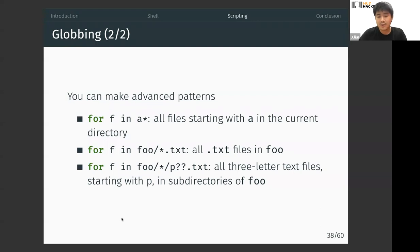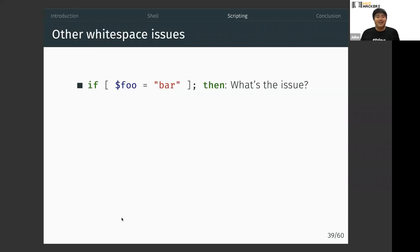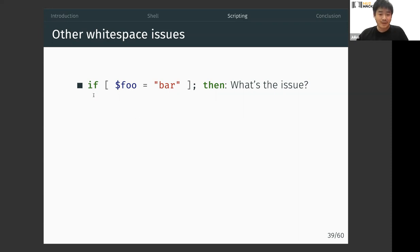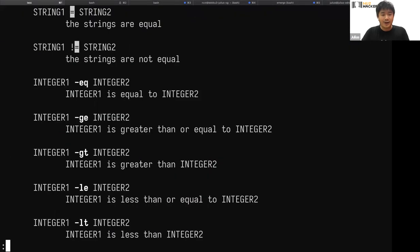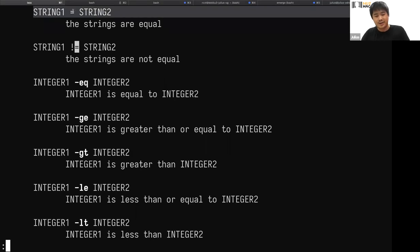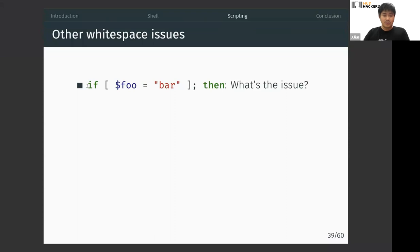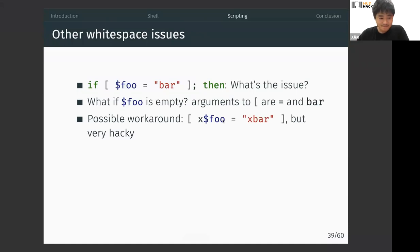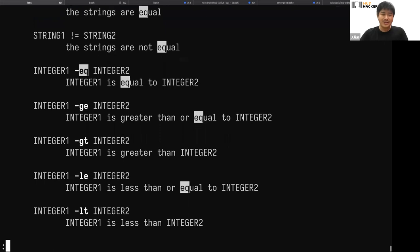There are other problems caused by whitespace in shell. Can anyone see what the issue is with this code? If you want to compare strings, you can use = (equals sign) inside test or square brackets. Note: there's a difference between -eq (integer comparison) and = (string comparison) in test — these are not the same.